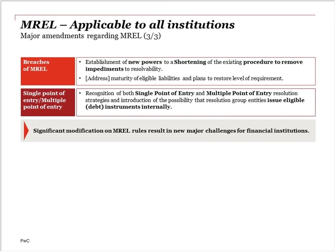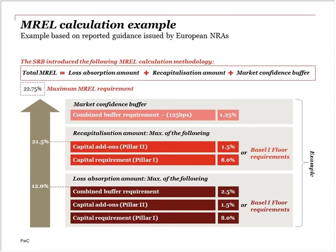On an example MREL calculation based on current guidance from the Single Resolution Board: the total MREL requirement is the sum of the loss absorption amount, the recapitalisation amount, and an assumed market confidence buffer. The loss absorption amount incorporates a combined buffer requirement of 2.5% of RWAs in addition to minimum Pillar 1 and Pillar 2A requirements, which are replicated in both the loss absorption and recapitalisation amounts. Together with an assumed market confidence buffer of 1.25% — half of the combined buffer requirements — that all adds up to 22.75%, which is not an unrealistic number for a medium or large-sized firm.